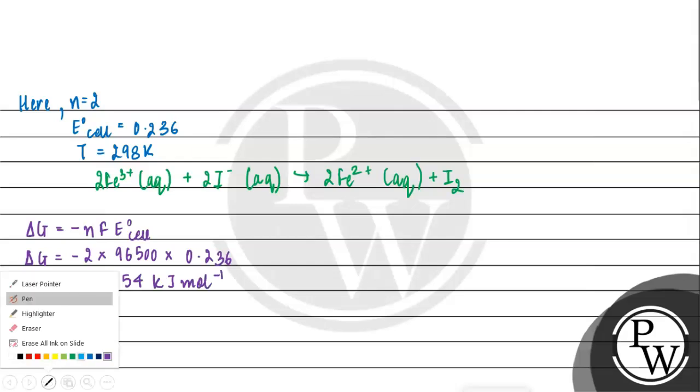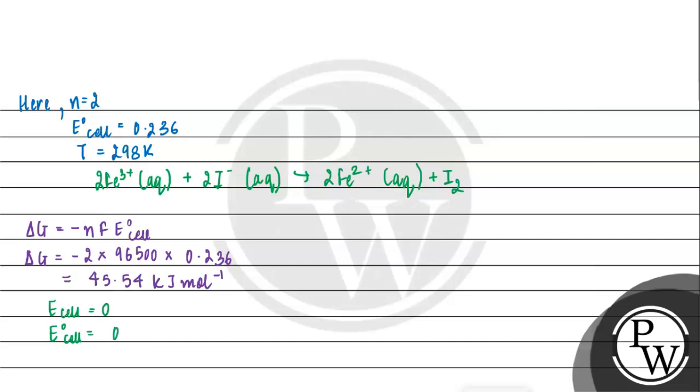Now let's calculate log Kc. We know E cell is 0, so according to Nernst equation, the value will be E° cell equals 0.0591 divided by 2 times log Kc. Substituting the value, which will be 0.236 times 2 divided by 0.0591, which equals log Kc.